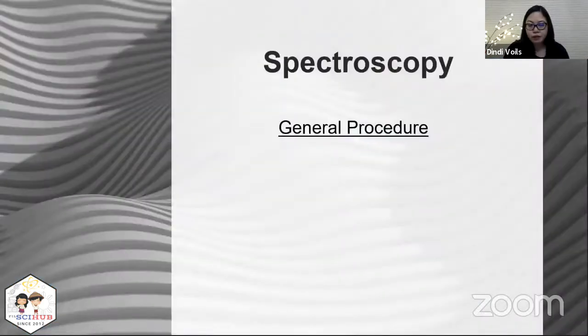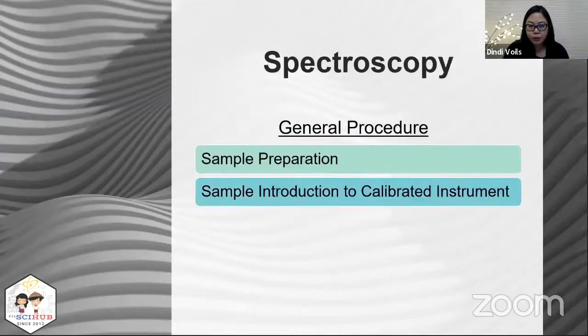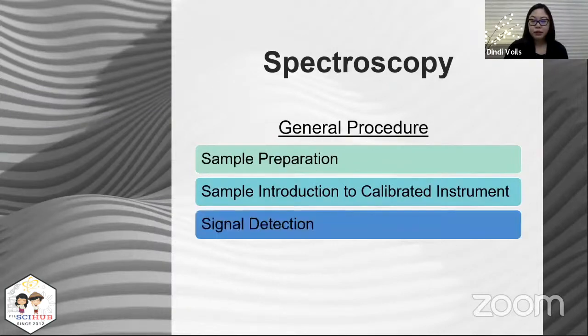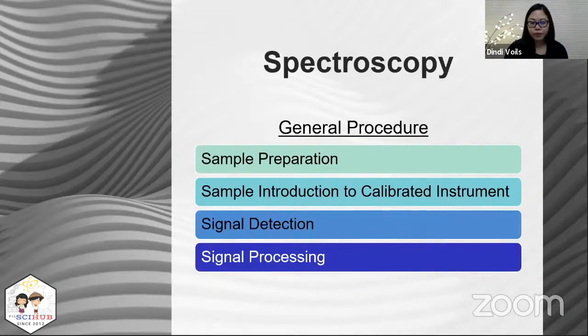General procedure: of course, you need to prepare your sample. Then you introduce the sample to the calibrated instrument. Then the instrument detects the signal from the sample, electrical, and then signal processing. So take note in spectroscopy, you have electrical or optical signal related to the concentration of the analyte.